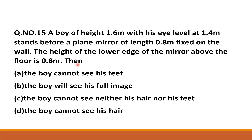In the last class we discussed that the minimum length of the mirror should be half of the height of the person. The person's height is 1.6 meter and the length of the mirror is 0.8 meter. It is placed at a height of 0.8 meter above the floor. The options are: boy cannot see his feet, cannot see his full image, cannot see neither, cannot see either his hair or his feet, or the boy cannot see his hair.